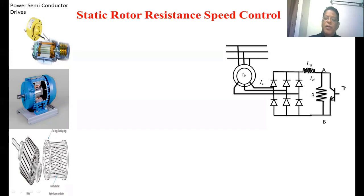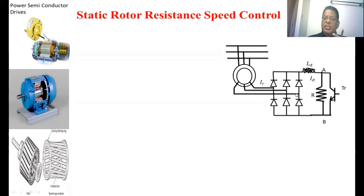The rotor will also be rotating in the same direction as the stator flux, that is, at synchronous speed. There is some amount of power generated in the rotor because there is always a relative speed existing between the stator flux and the rotor. Whatever power is generated in the rotor, we are going to convert it into DC power.